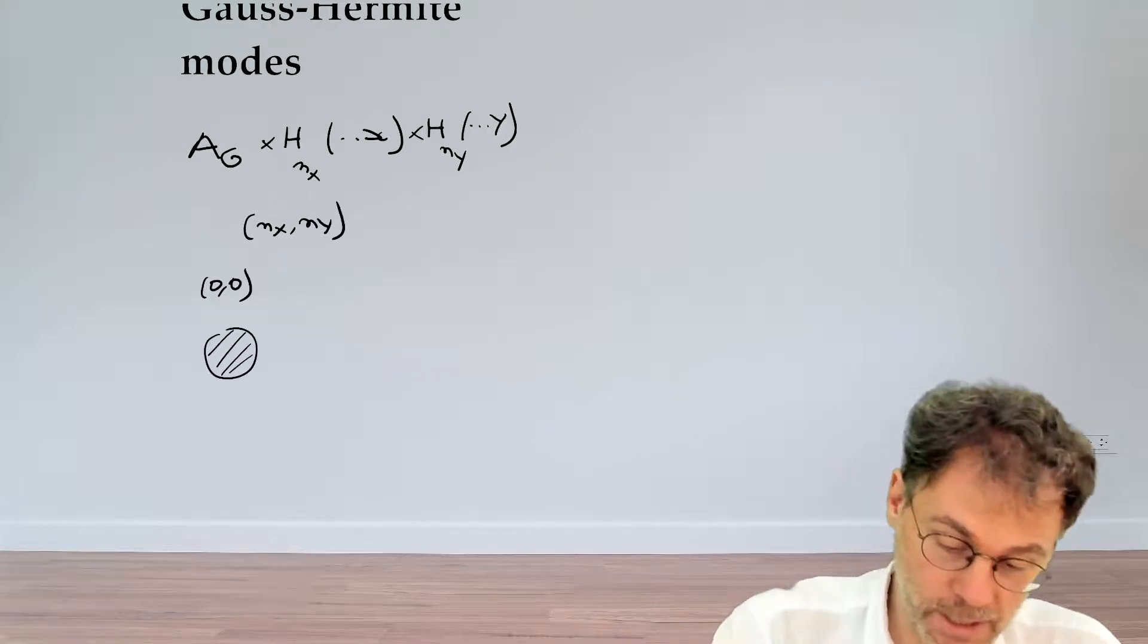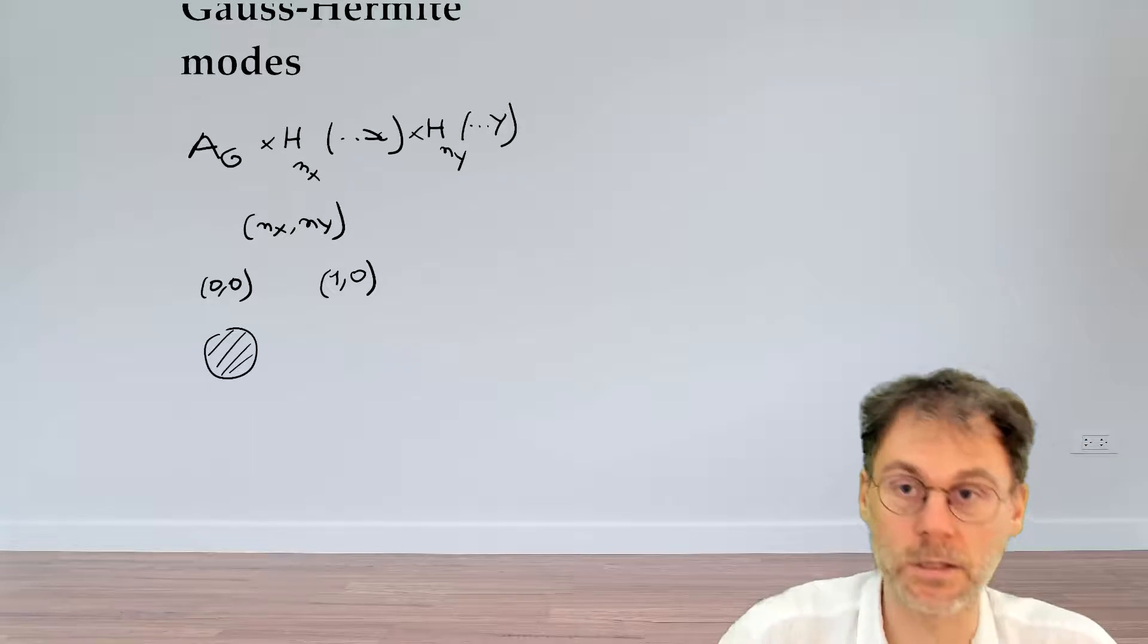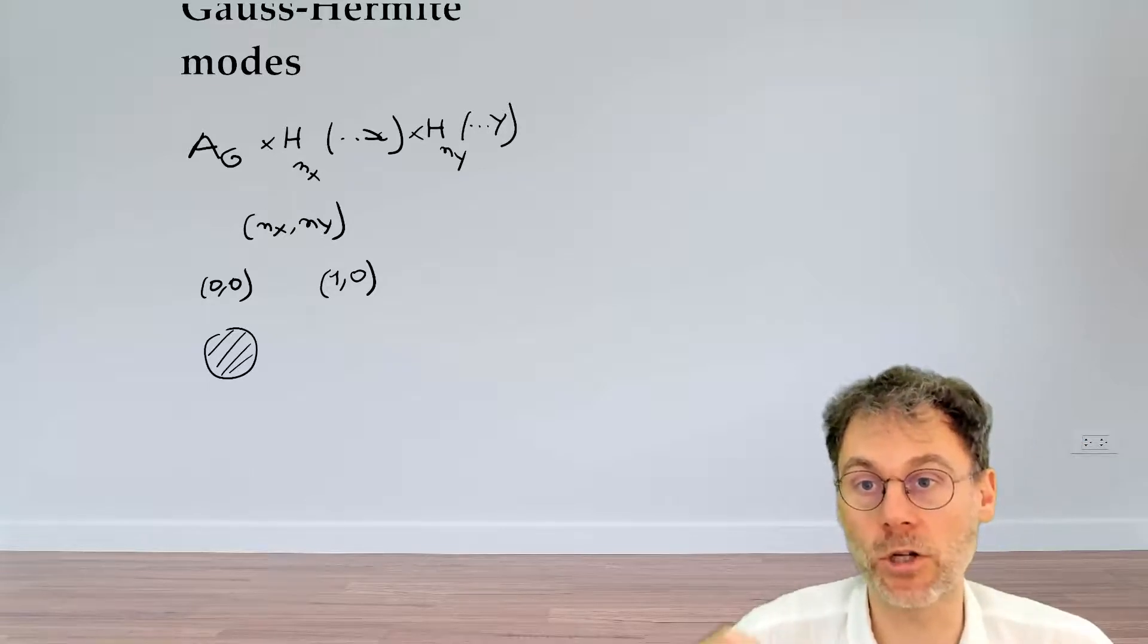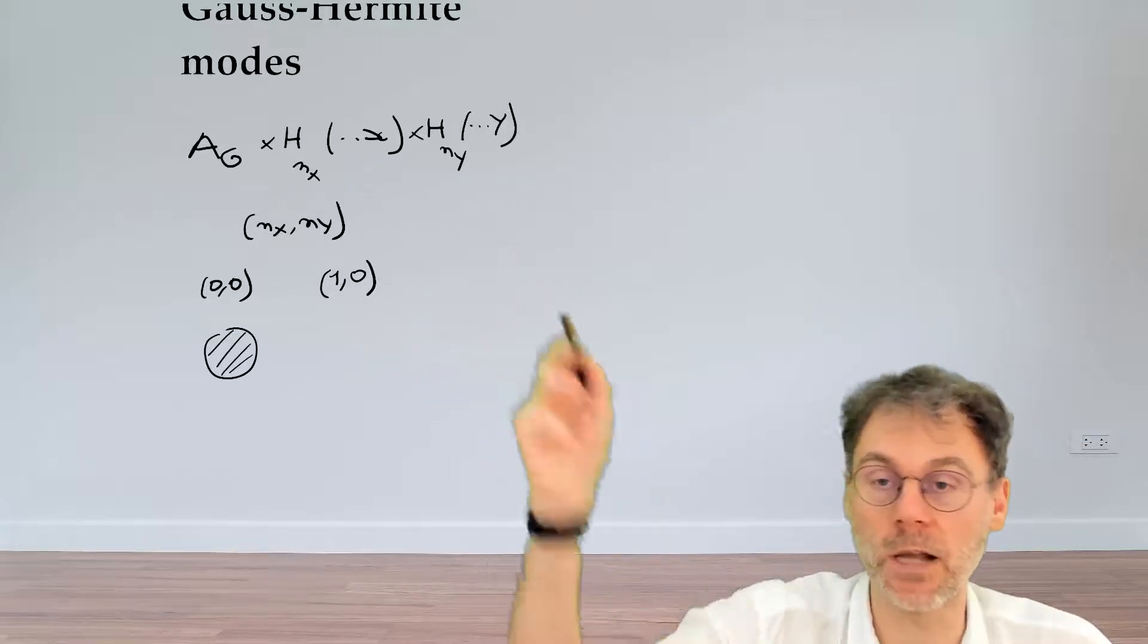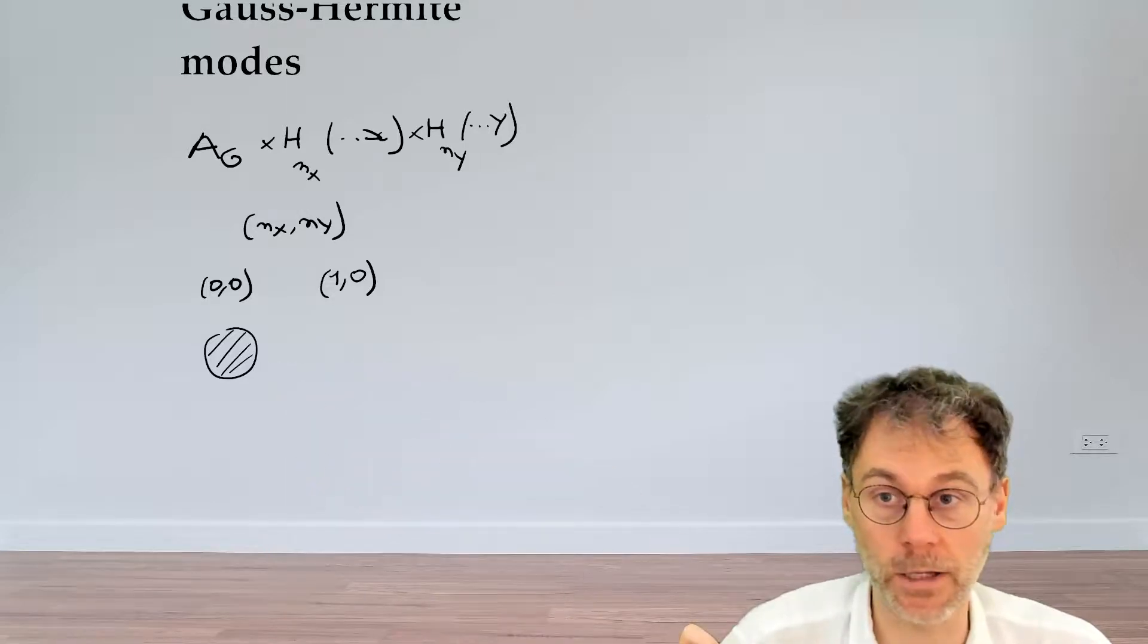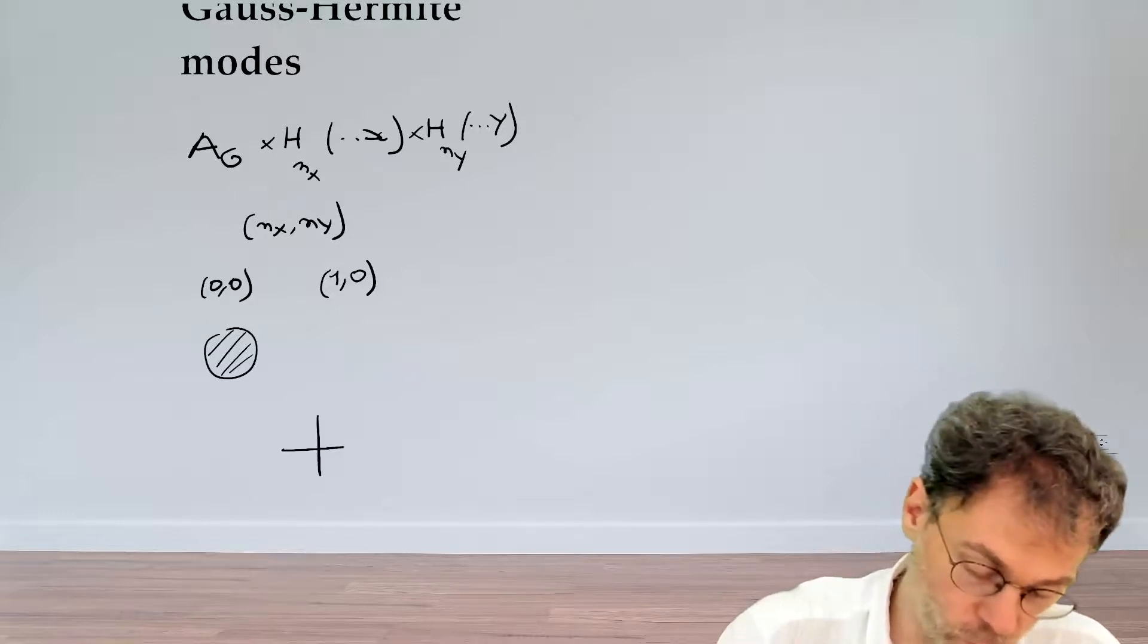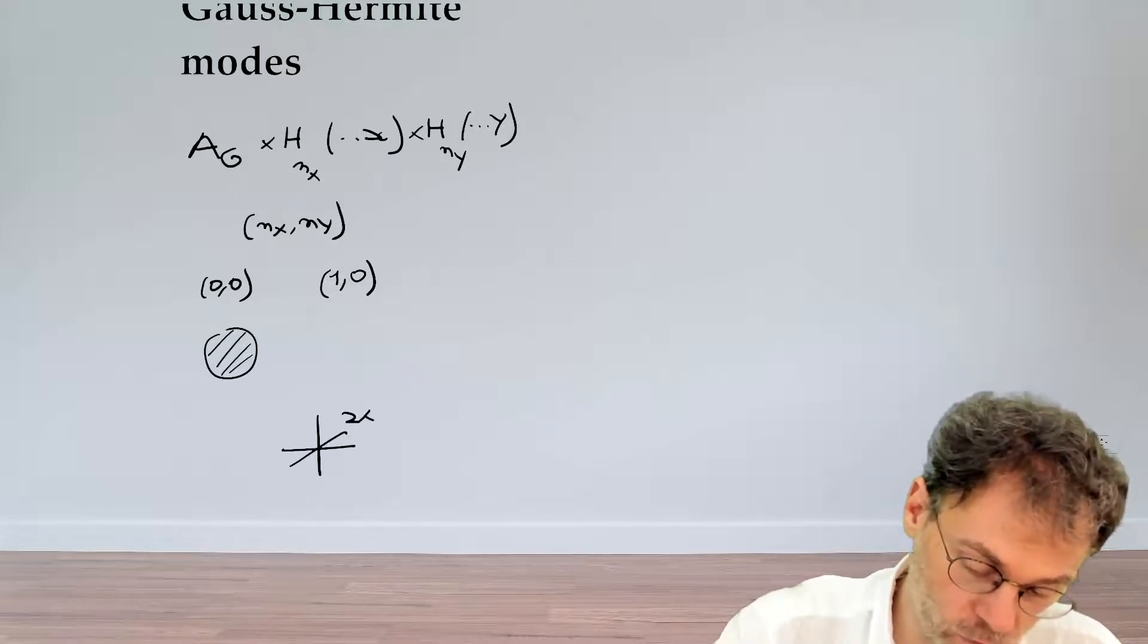Let's now have a look at the Hermite polynomial of order 0. So in the y direction, nothing will change. But in the x direction, our Gaussian field here gets multiplied by the Hermite polynomial of order 1. Now the Hermite polynomial of order 1, that's actually 2x.